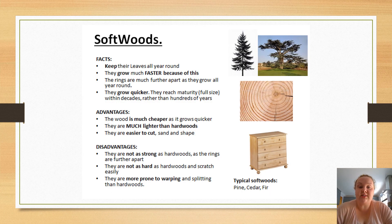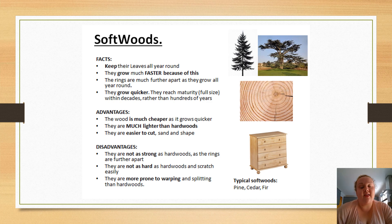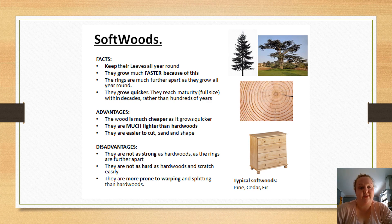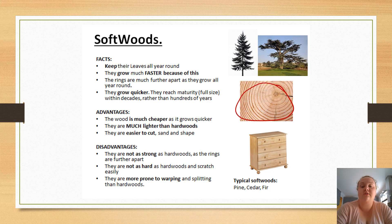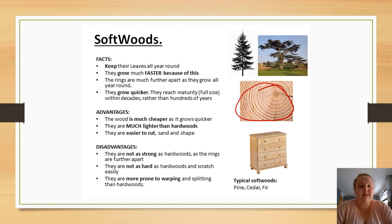We're going to start with softwoods. Softwoods keep their leaves all year round, which means they're evergreen trees. Because they keep their leaves all year round, they can grow all year round, which means they grow pretty fast. Because they grow fast, the rings inside the wood are much further apart than in hardwoods, which is what makes these woods a little bit softer and a little bit weaker.